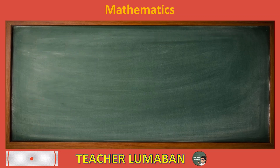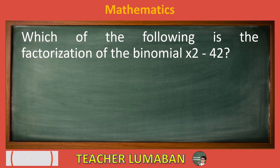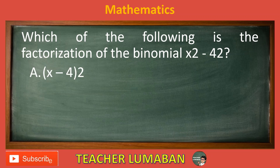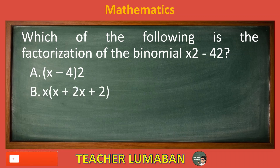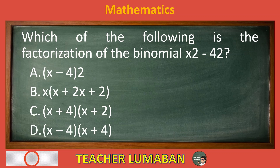Which of the following is the factorization of the binomial X² minus 4²? Letter A: (X minus 4) by 2. Letter B: X(X plus 2)(X plus 2). Letter C: (X plus 4)(X plus 2). Letter D: (X minus 4)(X plus 4).